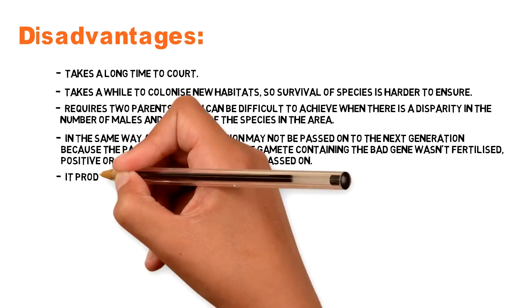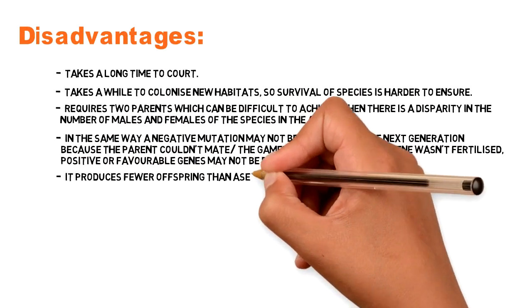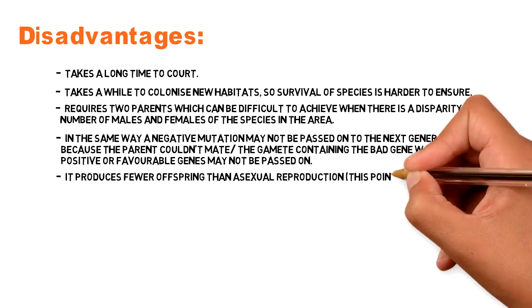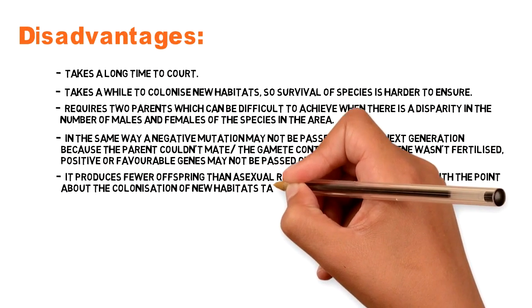It produces fewer offspring than asexual reproduction. This point ties in with the point about the colonisation of new habitats taking a while.